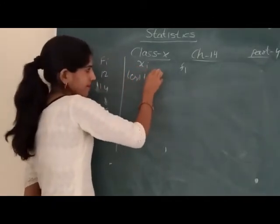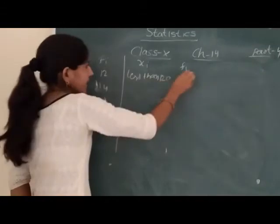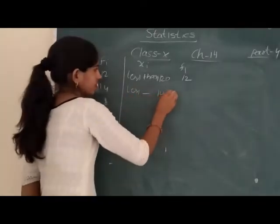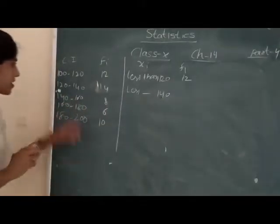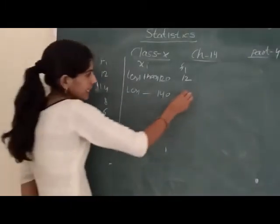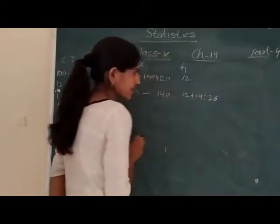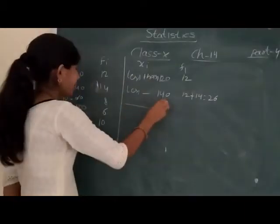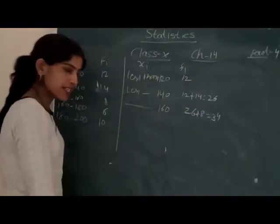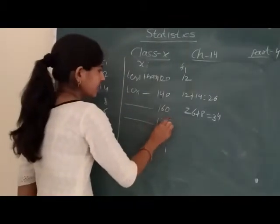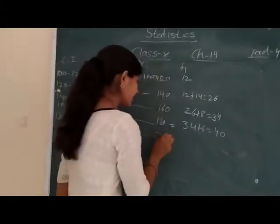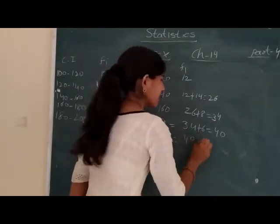What do we have done? Less than. Less than 120 me kitne hai? 12. Less than 140 me kitne hai? 12 plus 14 is 26. Less than 160 me 26 plus 8 is 34. Next, less than 180, 34 plus 6 is 40. And less than 200 is 40 plus 10 is 50.